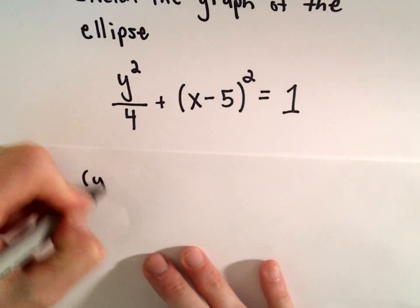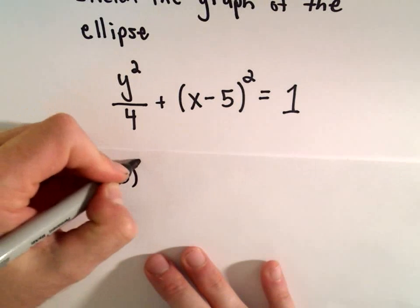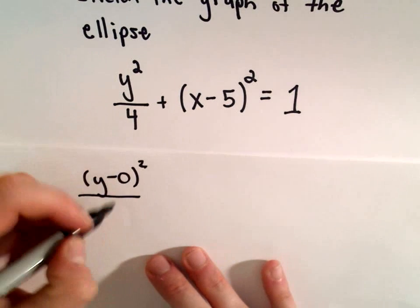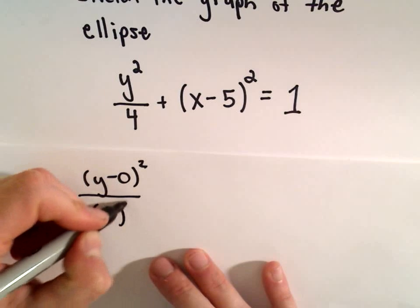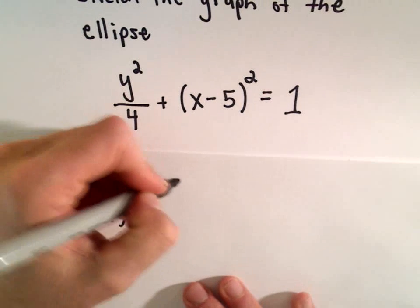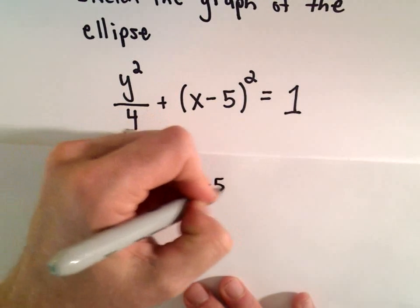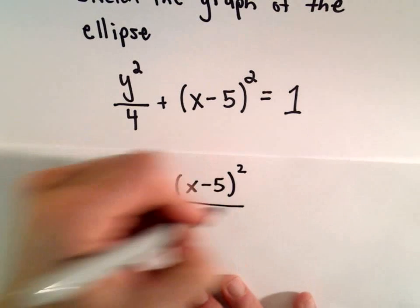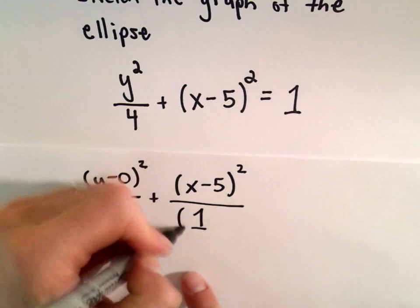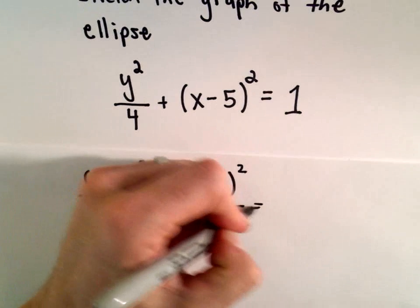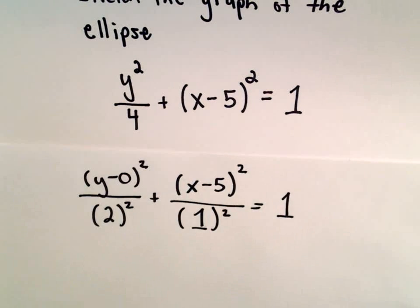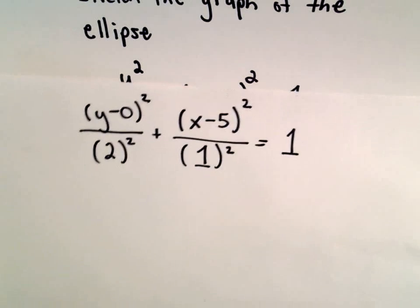So we could write this as y minus 0 quantity squared. We can write 4 as 2 squared. Then we have x minus 5 squared. We could put that over 1, but we could even just write 1 as 1 squared. I'm just putting this in the standard form of an ellipse.